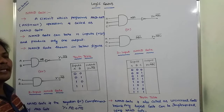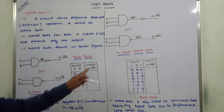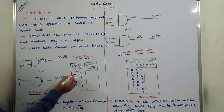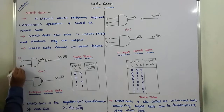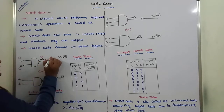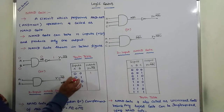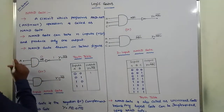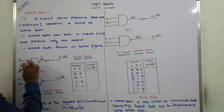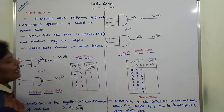This is the truth table of the NAND gate. A and B are two inputs and Y is the output. For inputs 0,0: 0 AND 0 = 0, complement of 0 is 1, so Y = 1. For inputs 0,1: 0 AND 1 = 0, complement of 0 is 1, so Y = 1. For inputs 1,0: 1 AND 0 = 0, complement of 0 is 1, so Y = 1.